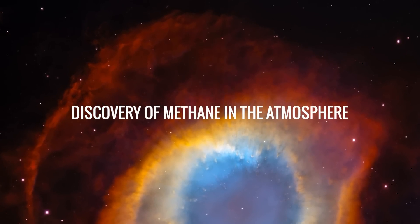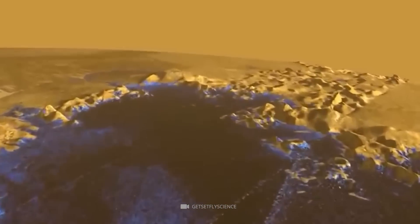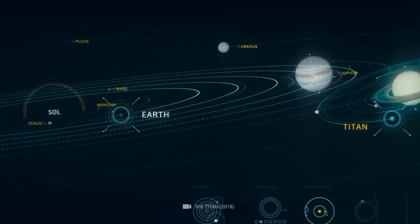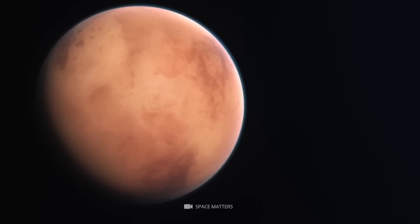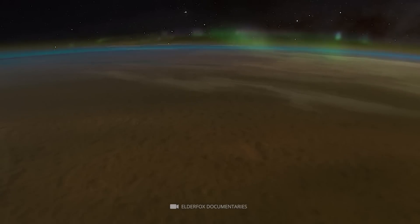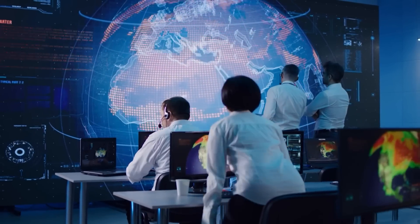Discovery of methane in the atmosphere. One of the key discoveries on Titan is the presence of methane in its atmosphere. This is significant, because no other planet or moon in our solar system has been found to have substantial amounts of gas in its atmosphere. Methane is a potential greenhouse gas that can trap heat in the atmosphere, much like carbon dioxide does on Earth.